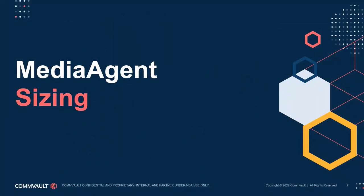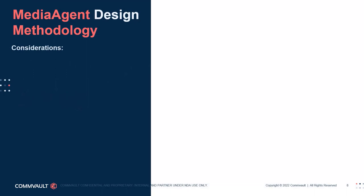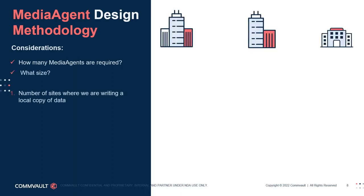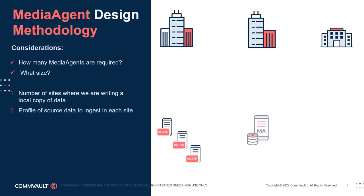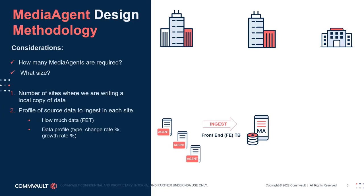Now that we've talked about placement options, let's move on to media agent sizing. There are two basic but important considerations: how many are needed, and what size should they be? Start by identifying all sites where a local copy of data needs to be written — you should have a good idea from the solution discovery phase. Next, factor in the amount of front-end terabytes and the profile of that data to be ingested at each site, using information from the data profiling exercise.